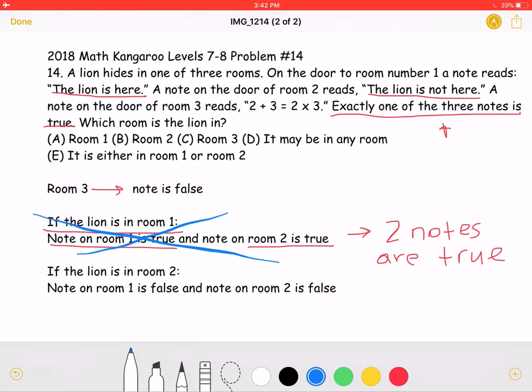Now, let's see what happens if the lion is in room 2. That would make the note on room 1 false and the note on room 2 false, which would make all three notes false. Which, as the problem states, again, only one of the three notes is true. And here, none of them would be true. That means that the lion is not in room 2 either.